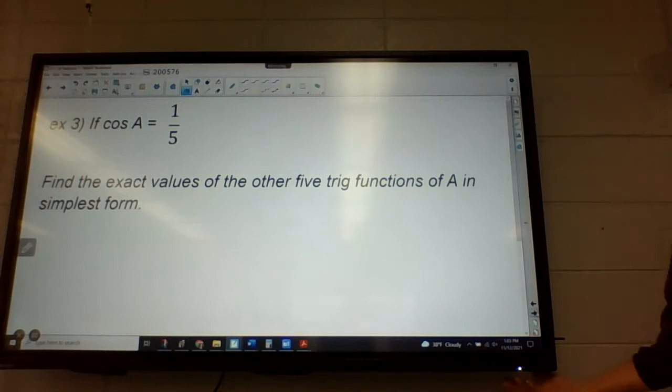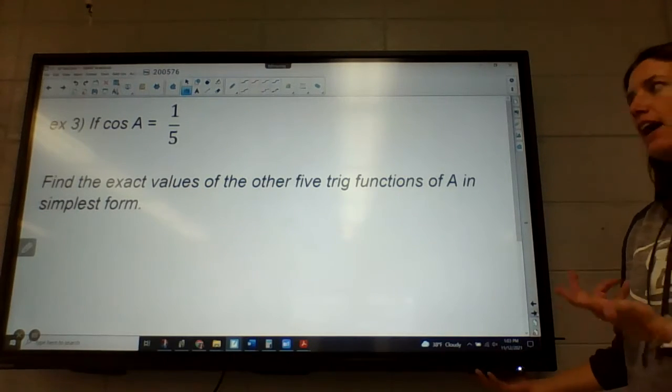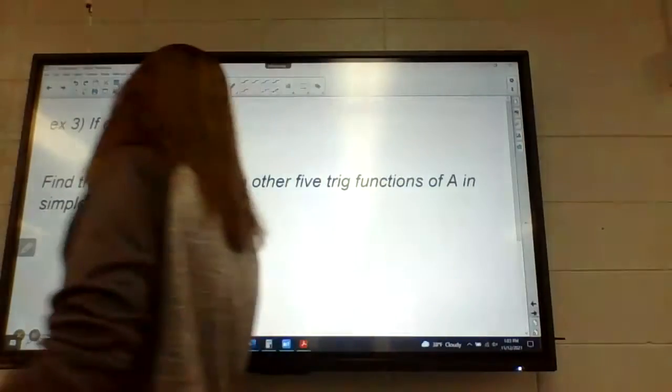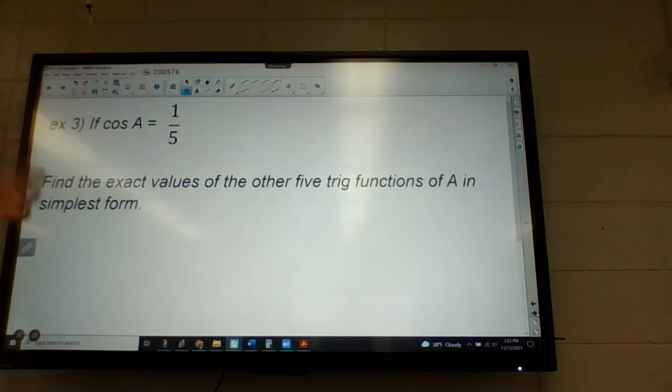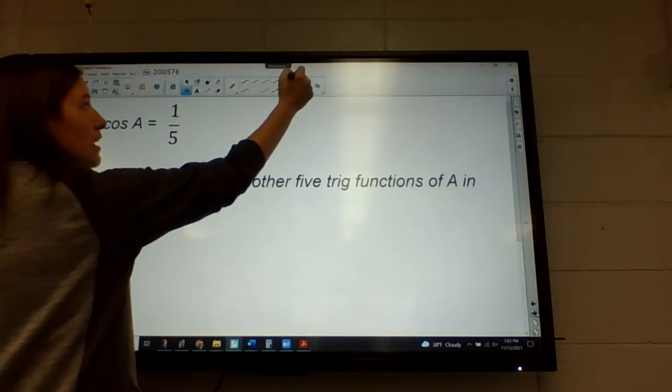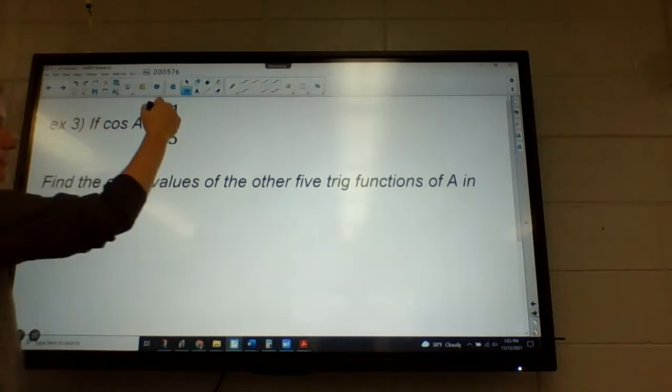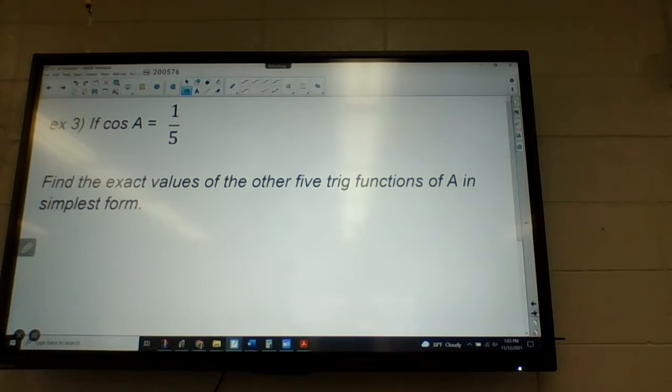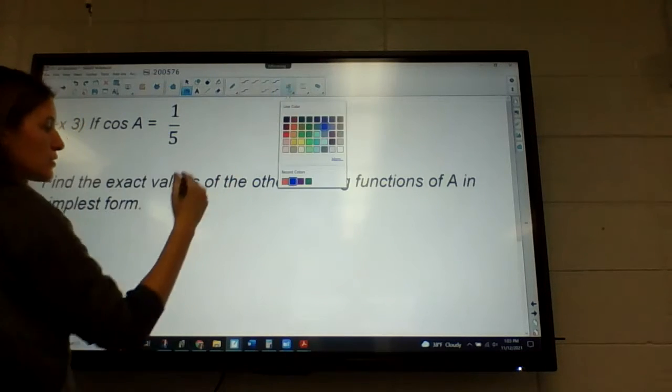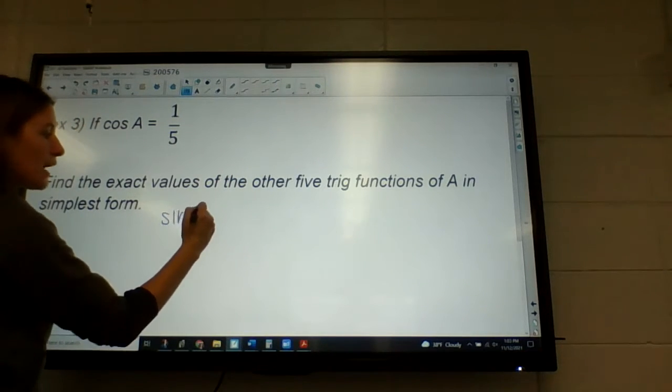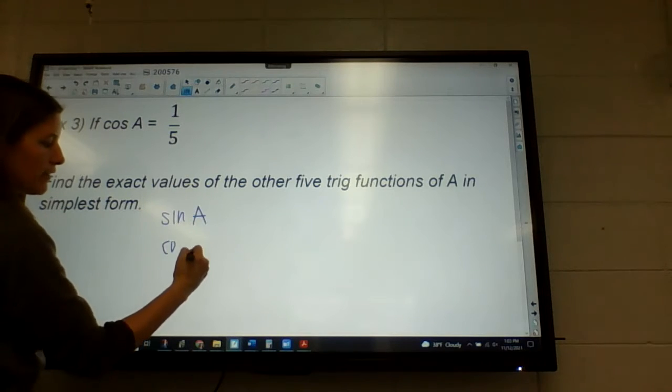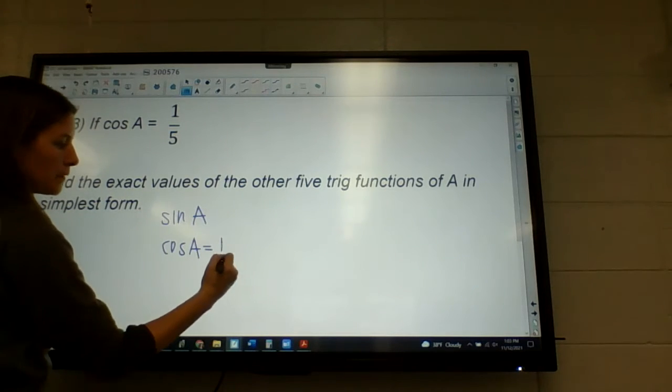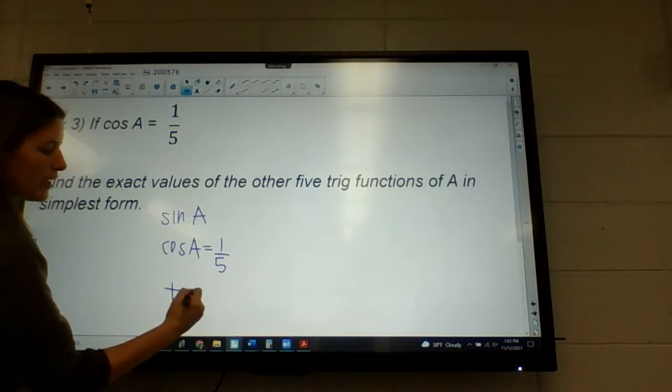Okay, so they give us cosine of A. They want us to find the other five in terms of using that kind of triangle. Now, since they're telling us the cosine, we know this has to be a right triangle, so we don't need to wonder if it's a right triangle. So they're basically asking us for sine of A. We obviously know cosine of A.